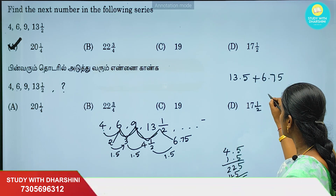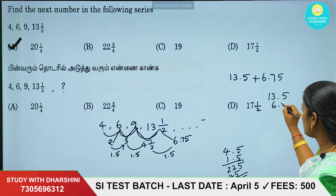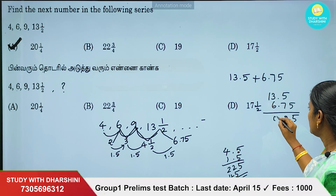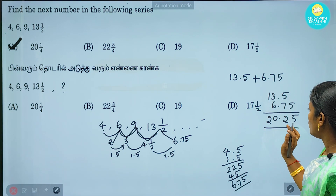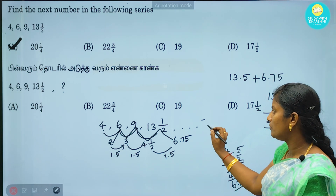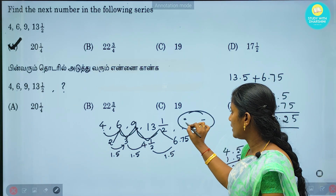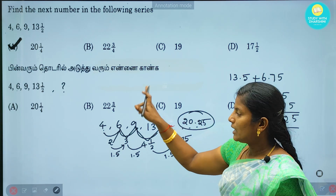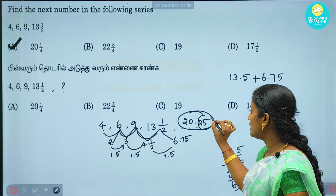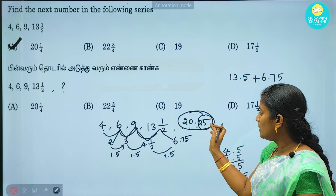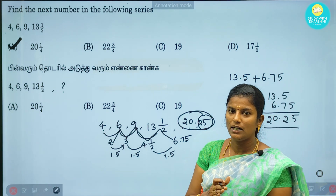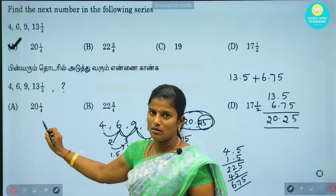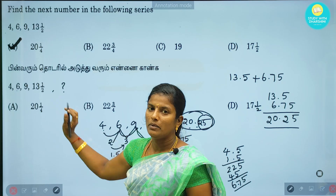We will add these two. 13.5 plus 6.75, then add 0.25, equals 20.25. This is our number. So let's check — 20.25. If you check the option, we have all the fractions. 20.25 equals 20 and 1/4. This is our answer. Option A: 20 and 1/4.